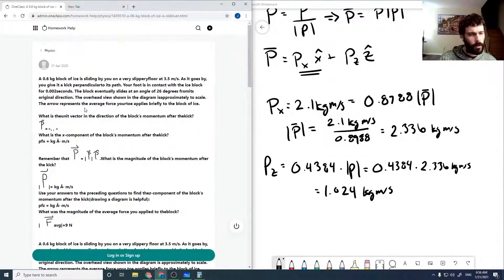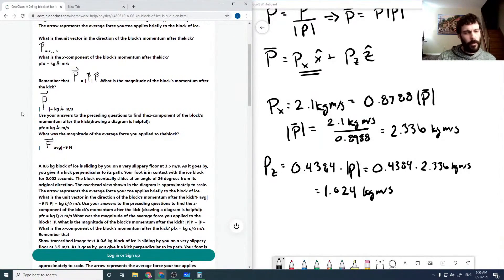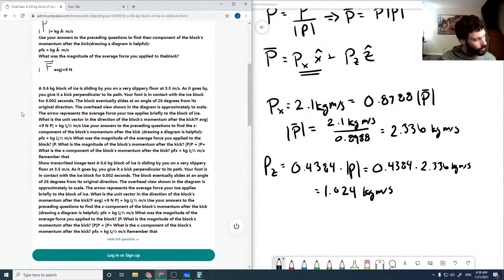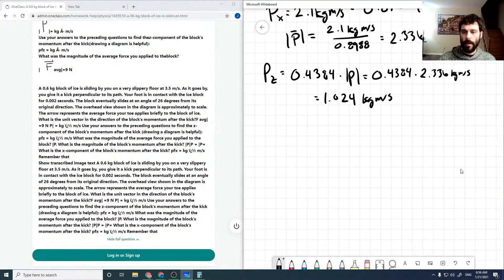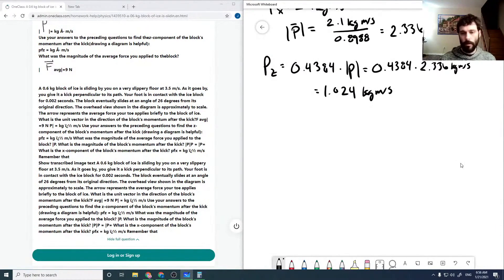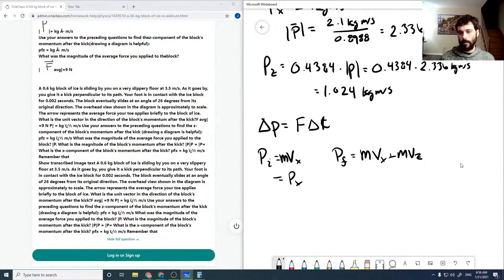So we found our z component and then it wants to know the magnitude of the average force we applied to the block. So if that's the z component of our momentum after the kick, we know that our impulse delta p is equal to F delta t. Our p initially was just our mvx, our p afterward was mvx plus mvz, or this is just our px plus our pz. Let's give them some vector quantities.